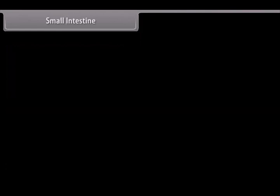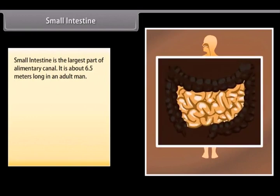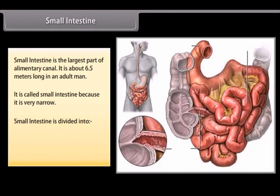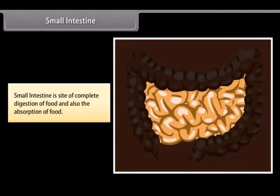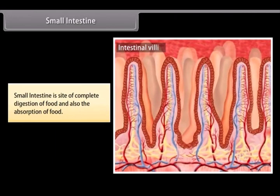The small intestine is the largest part of the alimentary canal. It is about 6.5 meters long in an adult man and is called small intestine because it is very narrow. Small intestine is divided into duodenum, jejunum, and ileum. It is the site of complete digestion of food and also the absorption of food.